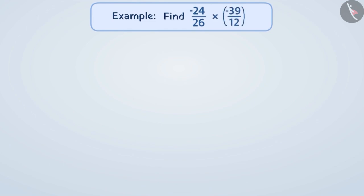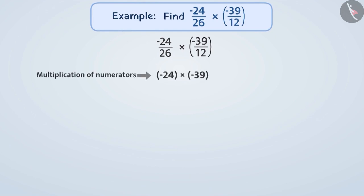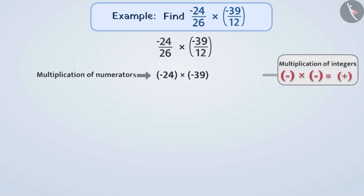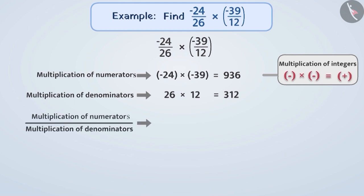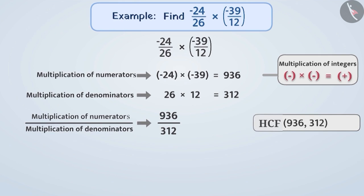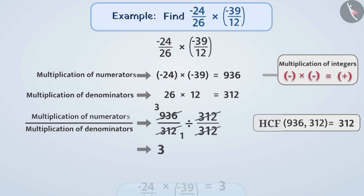Next example. Find minus 24 by 26 into minus 39 by 12. To solve this, we first multiply the numerators. Since minus 24 into minus 39 is a product of two negative integers, the product will be positive. Minus 24 into minus 39 is 936. Then we multiply the denominators: 26 into 12 is 312. The result is 936 by 312. The HCF of the numerator and denominator is 312. When we divide both by 312, we get the result 3.